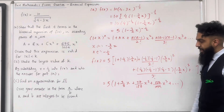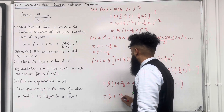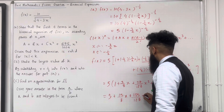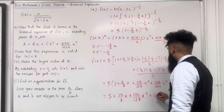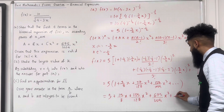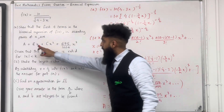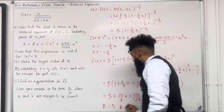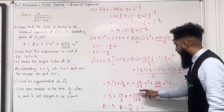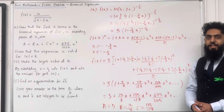The final step is to expand the bracket with the 5. So I get 5 plus 15 over 8 x plus 135 over 128 x squared plus 675 over 1024 x cubed plus dot dot dot. So now I can read off my constants: A is equal to 5, B is equal to 15 over 8, and C is equal to 135 over 128. That completes part A of the question.